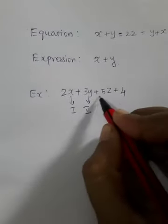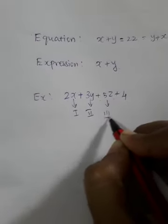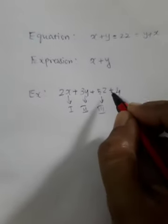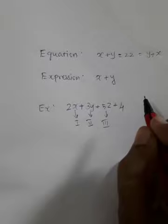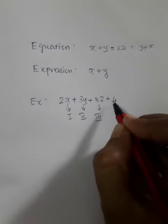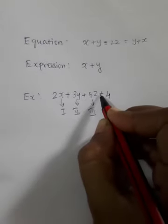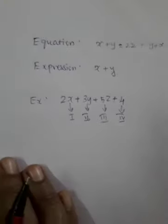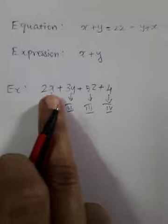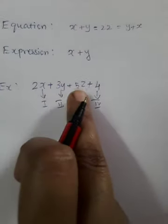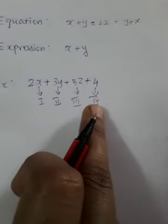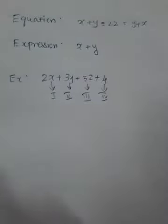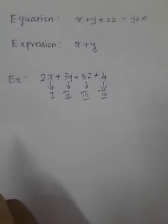Plus 5z is the third term, because in between we have a plus. 5z means 5 into z, but 5 into z is a single term. And 5z plus 4 has two terms because in between we have a plus, so 4 is the fourth term. To recap: 2x is term 1, 3y is term 2, 5z is term 3, and 4 is term 4. Note that 2 into x cannot be considered different terms — it is a single term only.